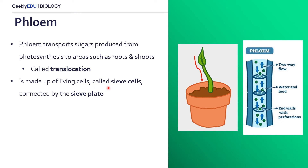This bidirectional flow is conducted within sieve cells, which are connected by sieve plates. Here in the diagram we have our phloem — each unit would be a sieve cell, and the little plates in the middle are the sieve plates, with bi-directional flow going up and down.